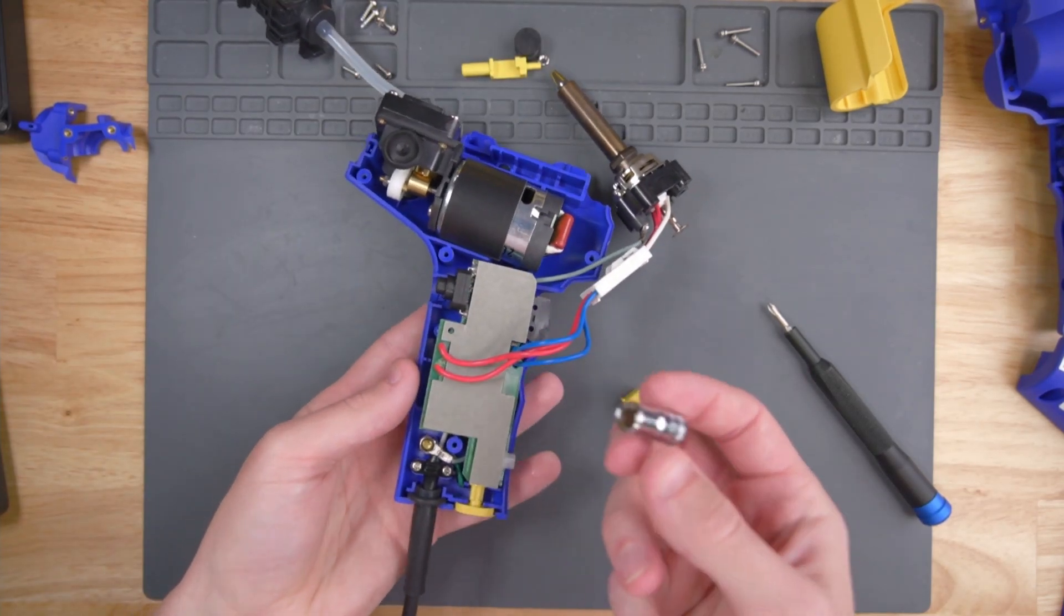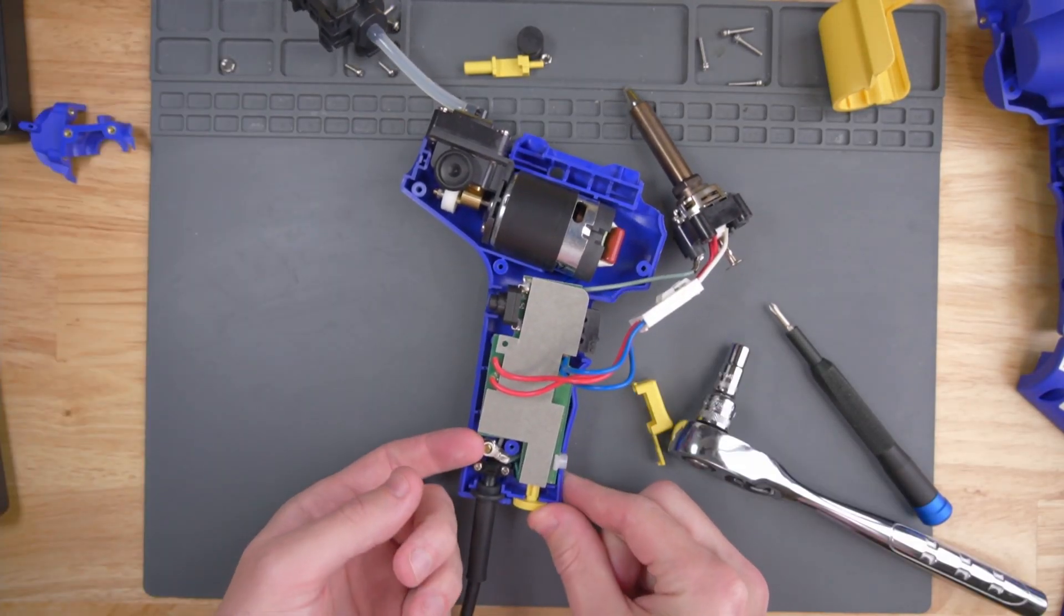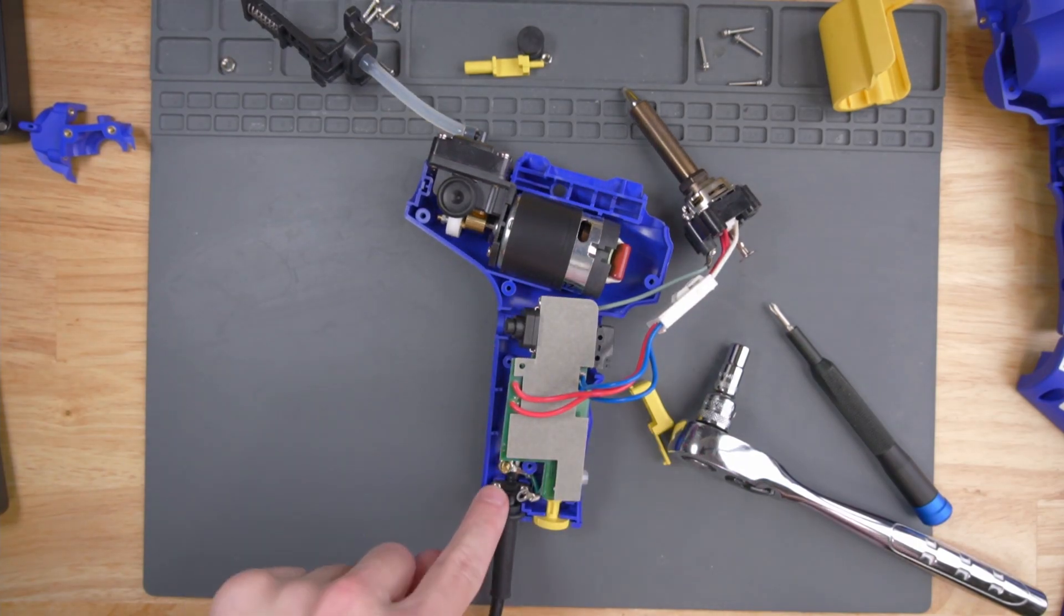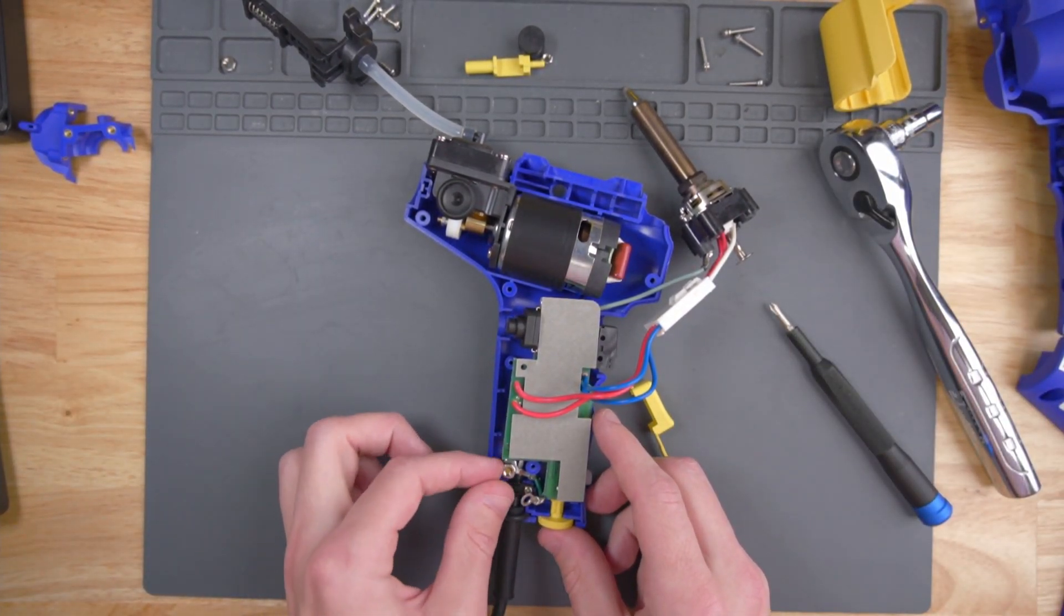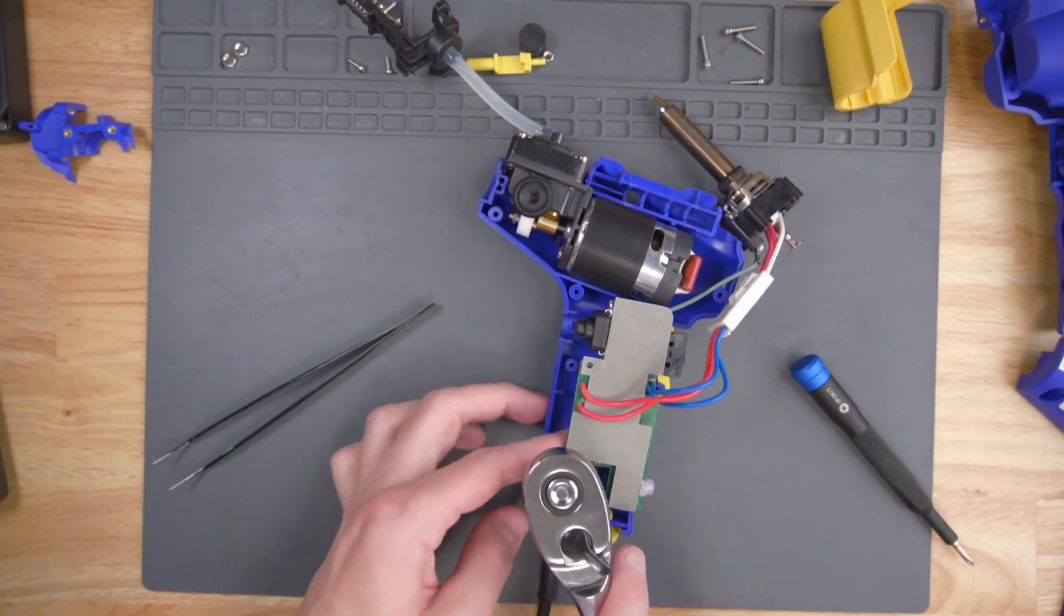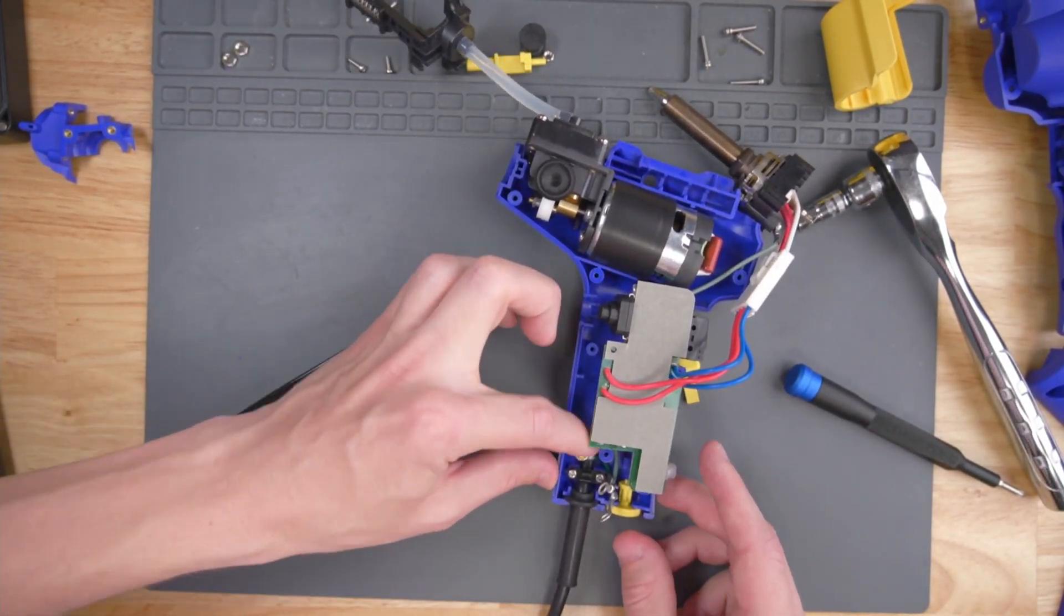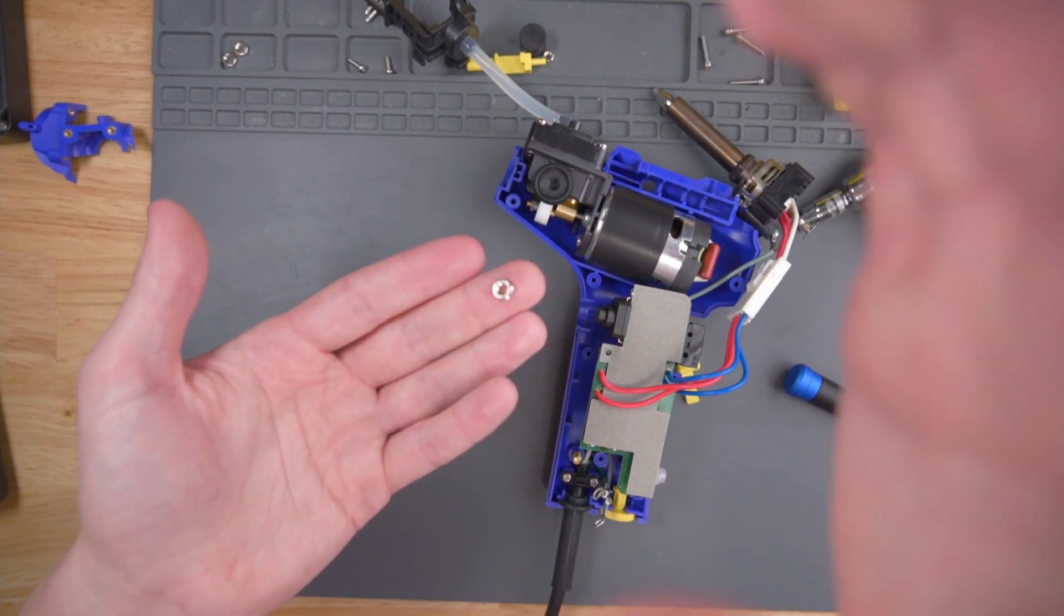I have a seven millimeter socket here. I'm going to try to unscrew these nuts right here. There's one nut, and then I can take off one of these grounding wire things. It looks like there's another one down here.